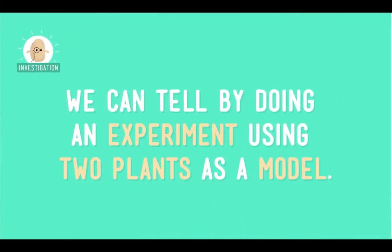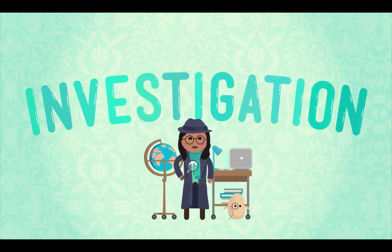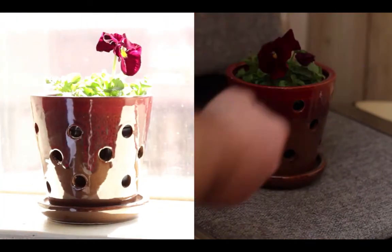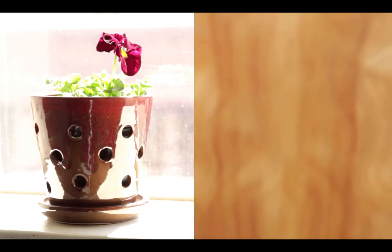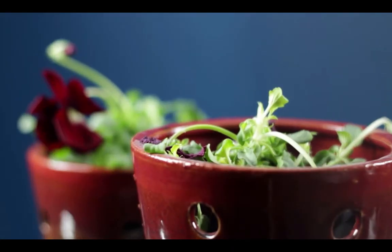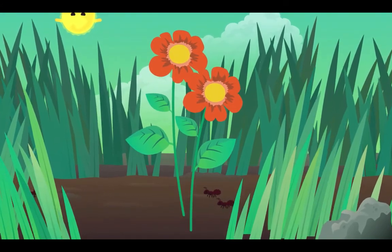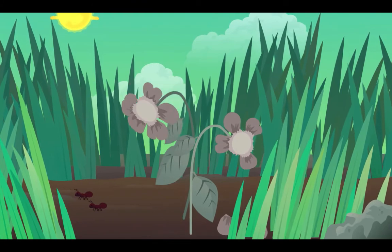How do we know that light is what's so important for photosynthesis? We can tell by doing an experiment using two plants as a model. These are both the same type of plant with the same amount of soil. We put one plant in the dark for a few days and one in the light, making sure that both plants get the same amount of water and are kept at the same temperature, just to keep things fair. The one that's been in the dark sure doesn't look too healthy, because there wasn't any sunlight to drive photosynthesis. Without photosynthesis, the plant can't make any sugar — no sugar means no energy, and no energy means a droopy, tired-looking plant.